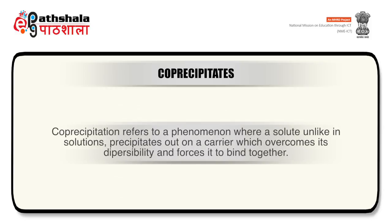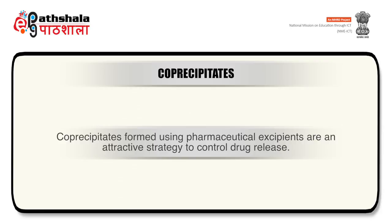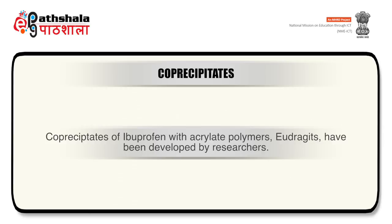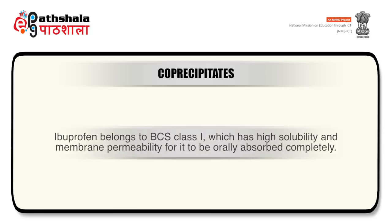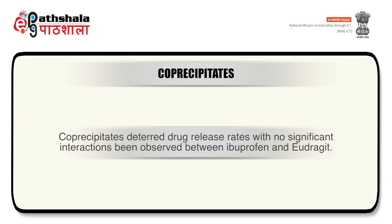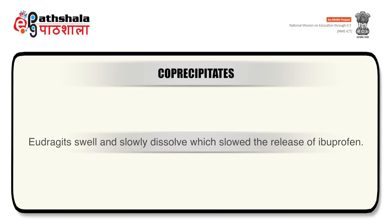Moving to coprecipitates: coprecipitation refers to a phenomenon where a solute, unlike in solutions, precipitates out on a carrier which overcomes its dispersibility and forces it to bind together. Coprecipitates formed using pharmaceutical excipients are an attractive strategy to control drug release. Coprecipitates of ibuprofen with acrylate polymers (eudragits) have been developed by researchers. Ibuprofen belongs to BCS Class 1, having high solubility and membrane permeability. Coprecipitates detered drug release rates with no significant interactions between ibuprofen and eudragits; eudragits swell and slowly dissolve, slowing the release of ibuprofen.